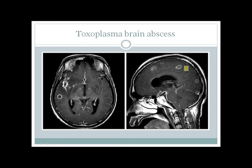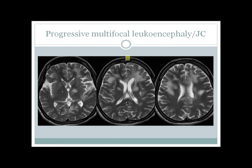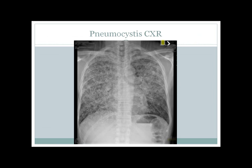Here you can see multiple ring-enhancing lesions in an HIV patient — this indicates toxoplasma brain abscess. Here you can see FLAIR images showing multiple areas of demyelination that gradually increase in severity — this is progressive multifocal leukoencephalopathy due to reactivation of JC virus. Here you can see a chest X-ray with ground-glass appearance — this is the chest picture of Pneumocystis pneumonia, occurring at CD4 less than 200.